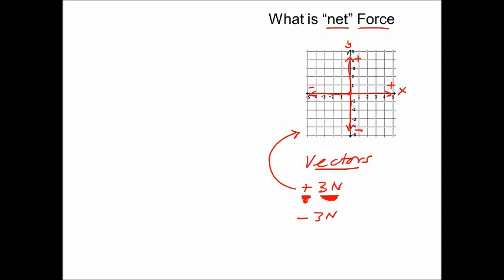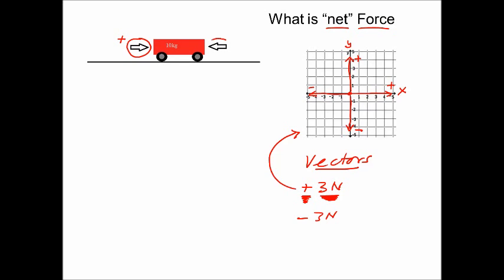Let's use this idea to analyze how forces act on real-life objects. We'll look at a wagon with a mass of 10 kilograms. There are two forces acting on this wagon, and they're both acting in opposite directions. The forces are represented by arrows — you can always represent a force by an arrow. The direction the arrow points shows the direction of the force. The arrow pointing right represents a positive force, and the arrow pointing left represents a negative force.